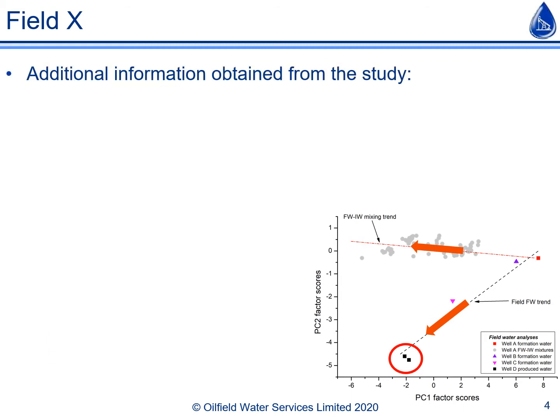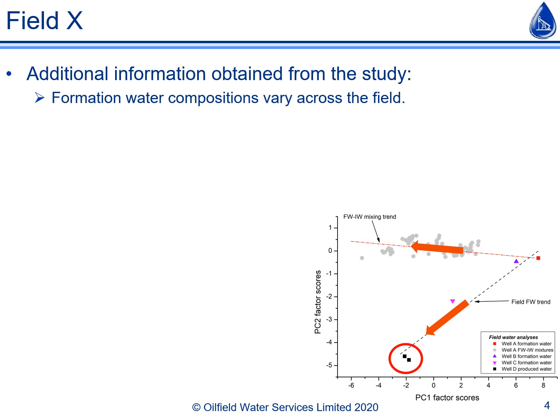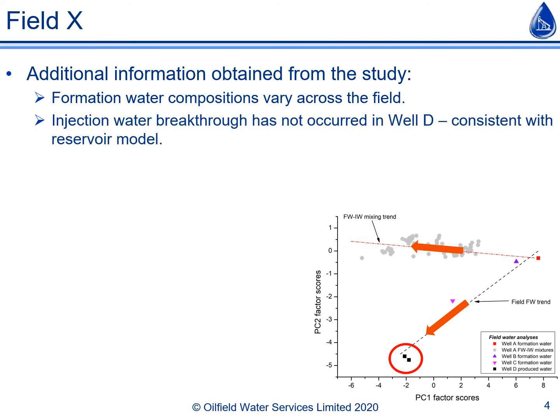Although the two questions originally posed were answered, as is quite common in field examples, more useful information was also obtained from the available data. For example, the results confirmed that formation water compositions varied across the reservoir, which was useful for scale management planning for the field. Also, the produced water compositions showed that injection water breakthrough had not occurred yet in well D. This was useful for scale management, and as it was also consistent with predictions from the reservoir model, it improved confidence in this model.